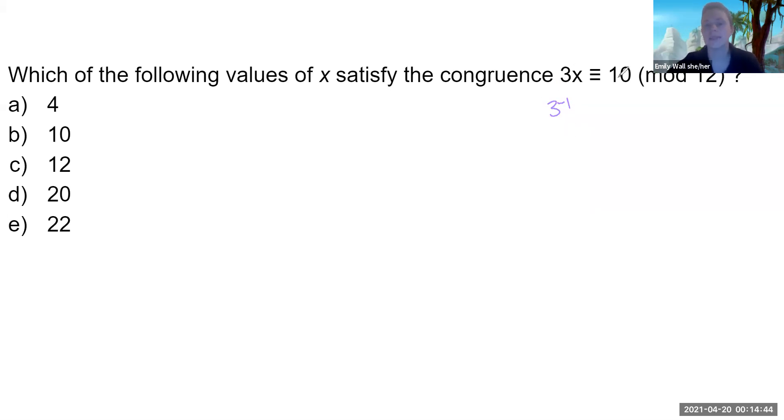We could multiply both sides, get x by itself, life would be great. But inverses don't always exist, so we have to think about, do we have an inverse?